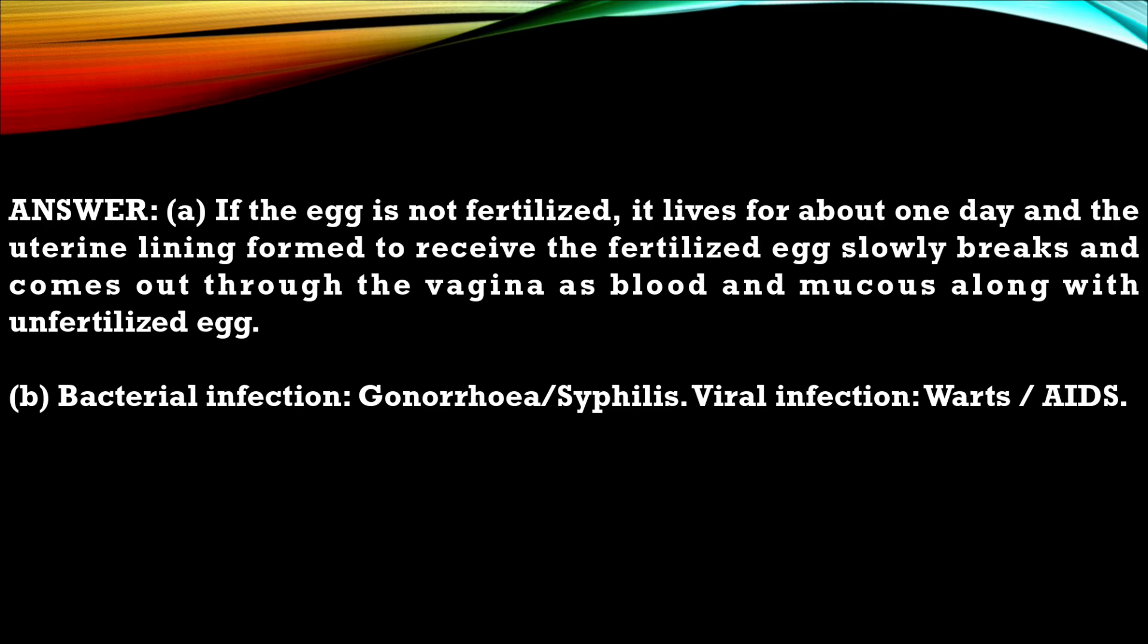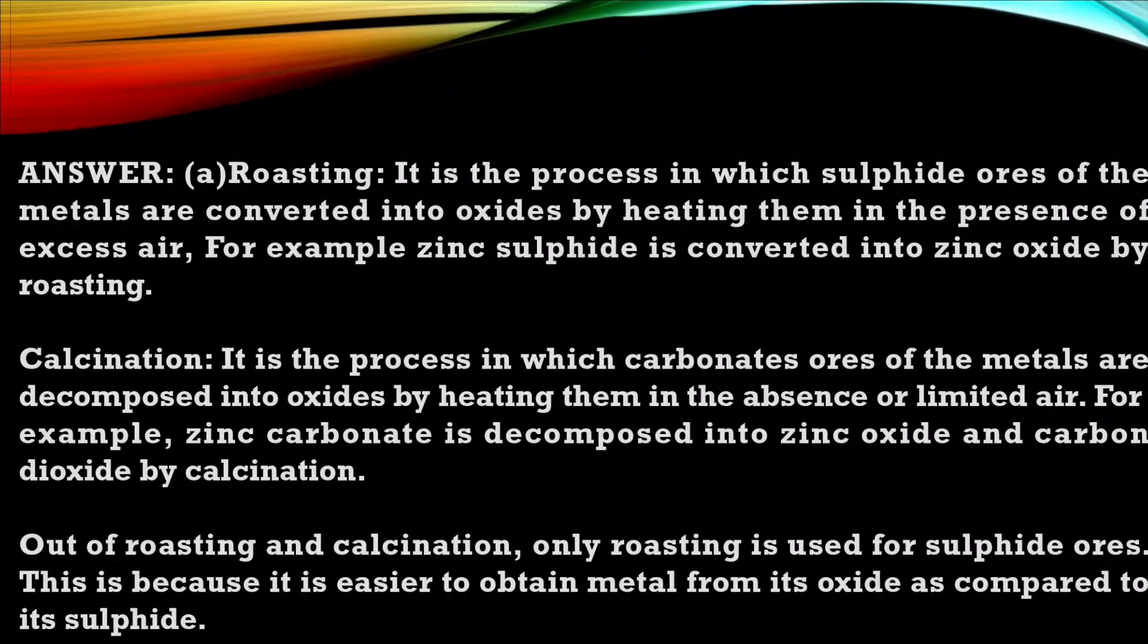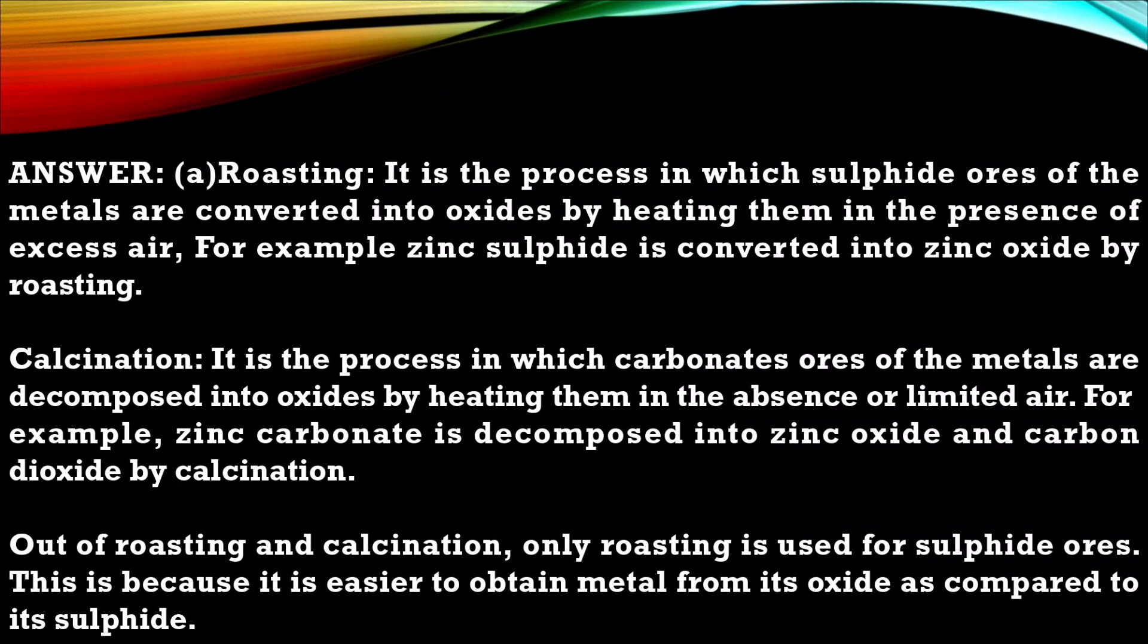Next question 13. A. Distinguish between roasting and calcination which of these two is used for sulfide ore and why. B. Write a chemical equation to illustrate the use of aluminum for joining cracked railway lines. C. Name the anode, the cathode and electrolyte used in electrolytic refining of impure copper. So this is the solution answer for that question.